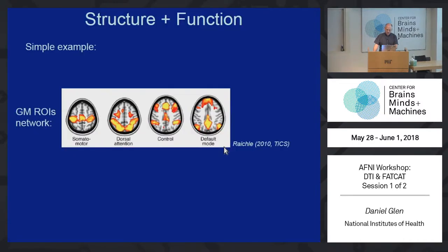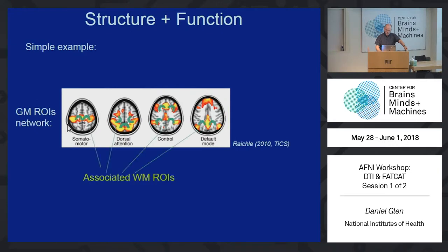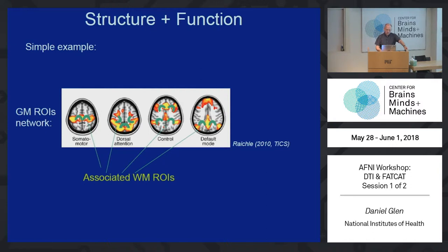Here are some examples. We have a gray matter network — these gray matter ROIs are gotten from the literature, from Neurosynth, or from your own experiment. Then we'll use those as our seed regions to see how connected they are with diffusion tensor imaging.